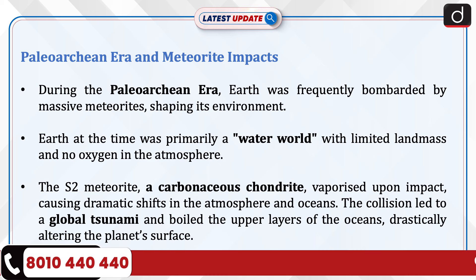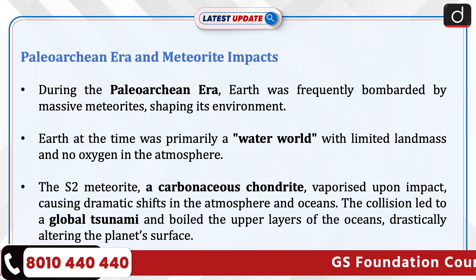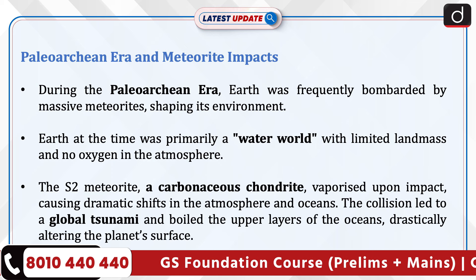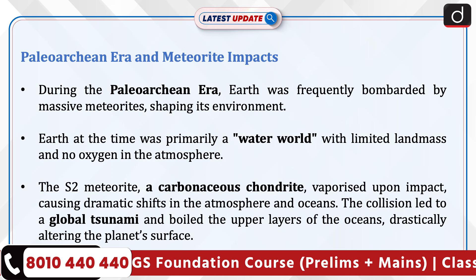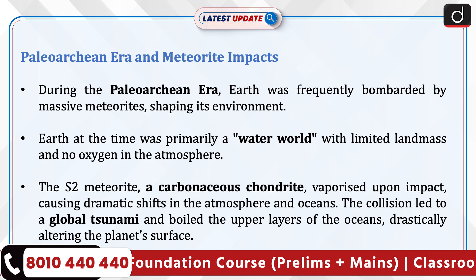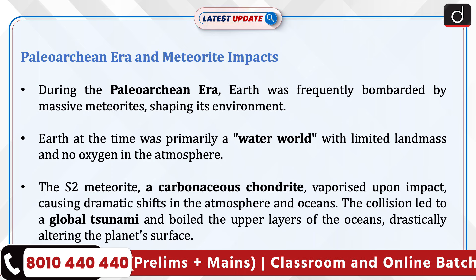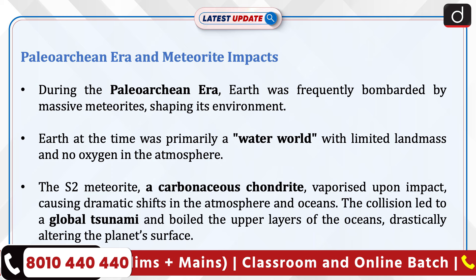During the Paleoarchian Era, Earth was frequently bombarded by massive meteorites, shaping its environment. Earth at the time was primarily a water world with limited land mass and no oxygen in the atmosphere. The S2 meteorite was a carbonaceous chondrite.